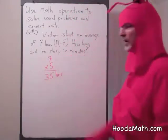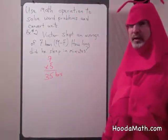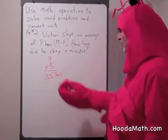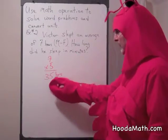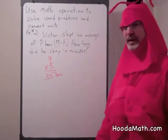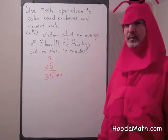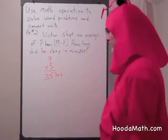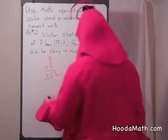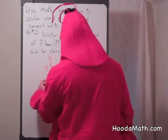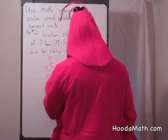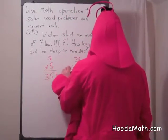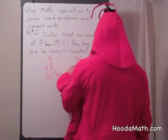But we want to know how long he slept in minutes, so we have to convert hours to minutes. How many minutes are in one hour? You're right, it's 60. So then we multiply 35 times 60.